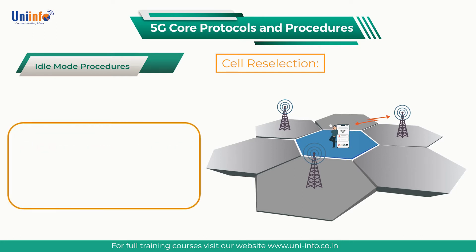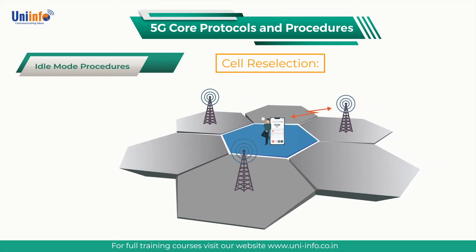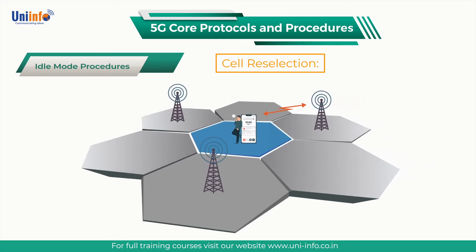In the case of RRC inactive, a UE can complete cell reselections without informing the network as long as the UE remains within the allocated RAN notification area. A base station allocates a RAN notification area when moving a UE from RRC connected to RRC inactive using the RRC release message.